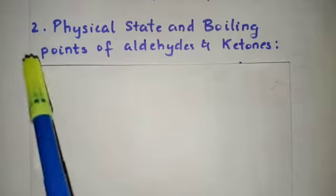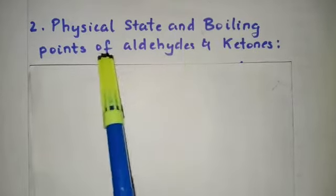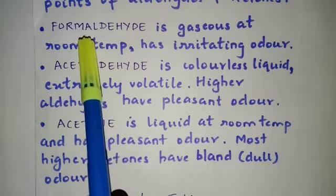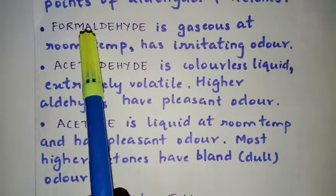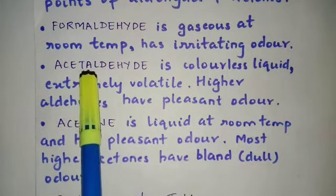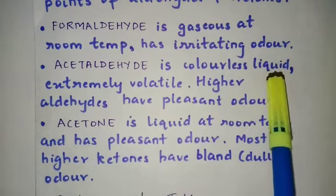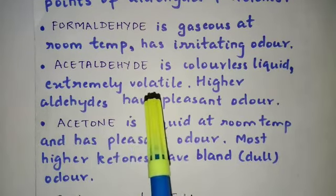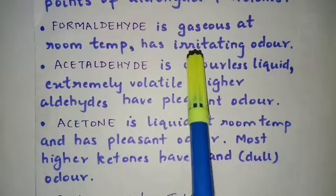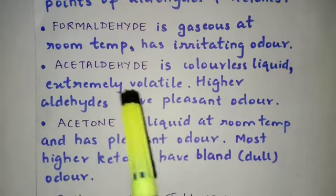The second physical property is physical state and boiling point of aldehydes and ketones. Formaldehyde, the very first aldehyde, is gaseous at room temperature and has an irritating odor. Acetaldehyde is a colourless liquid and is extremely volatile in nature — volatile means it evaporates easily. Higher aldehydes, meaning those with more carbon atoms, have a pleasant odor.